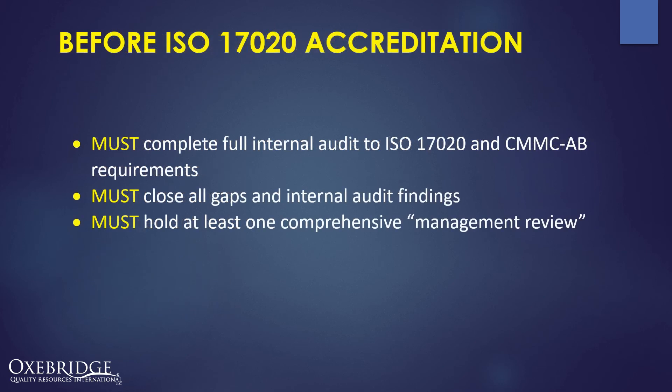Before you undergo any third-party ISO 17020 accreditation audit, you must do three things: complete a full internal audit of yourself against ISO 17020 and the CMMC AB requirements specific to C3PAOs; close any gaps and findings discovered; and hold at least one comprehensive management review event where top management gathers to assess how well the company is doing. These three things must happen or you would immediately fail your ISO 17020 accreditation audit.